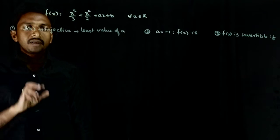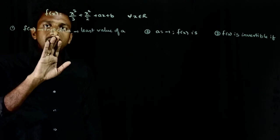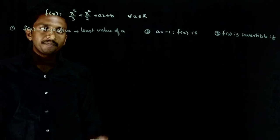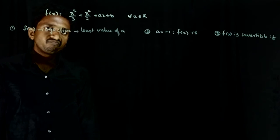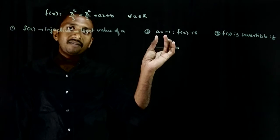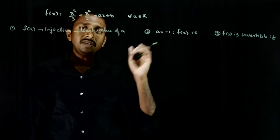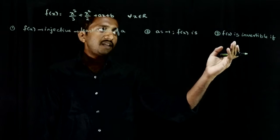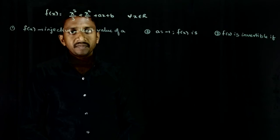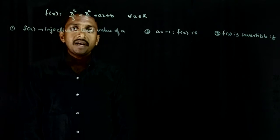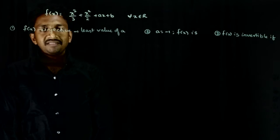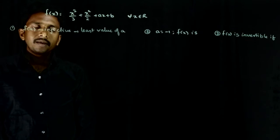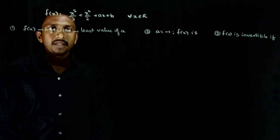First question is, if f of x should be an injective function, that is one-one function, what is the least value of a? Second question is, when a equals minus 1, what is the nature of f of x, one-one or not. And third is, if f of x is invertible, what are the possible values of a. These are 3 questions which are asked. Very easy question, let us try to solve this.